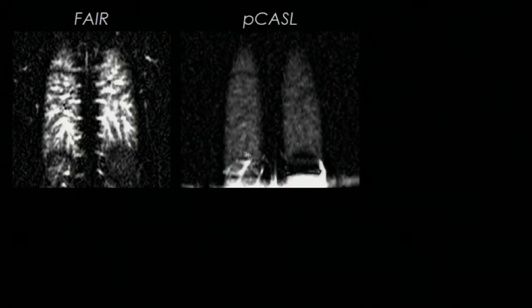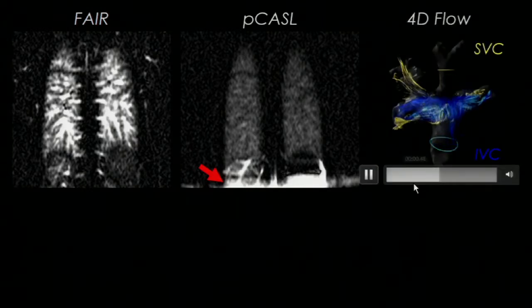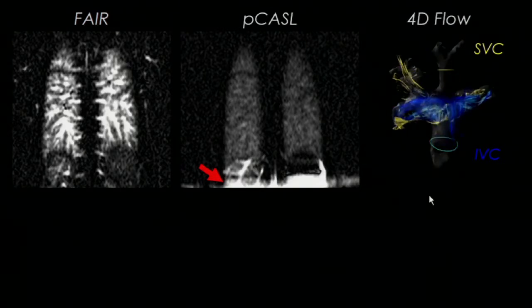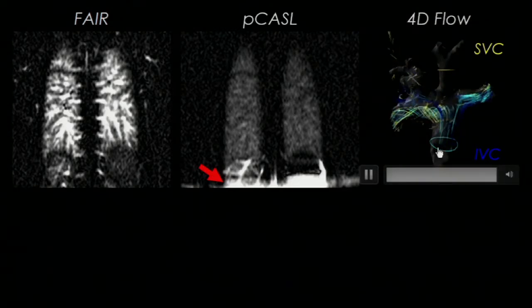Here are a couple of example subjects. This is FAIR perfusion showing total perfusion to a coronal slice, and PCASTLE showing only the IVC contribution, in this case appearing to be evenly distributed between the lungs. We also see a labeling artifact below the diaphragm caused by that labeling plane. With 4D flow, we can draw ROIs over the SVC and the IVC and generate flow pathlines to visualize the flow distribution from each vessel. In this case, the blue IVC flow also appears to be evenly distributed between the lungs.